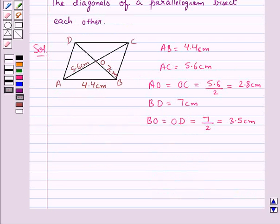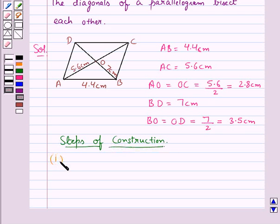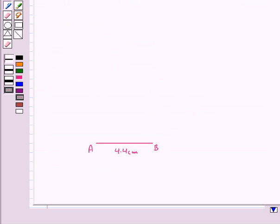Now we shall construct this parallelogram step by step. First of all we draw AB equal to 4.4 cm. This is AB of measure 4.4 cm.